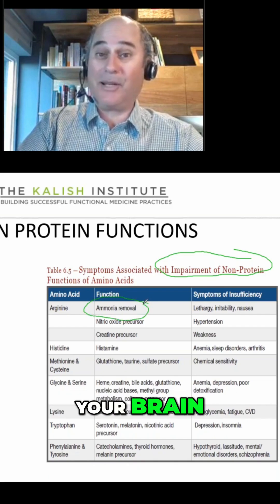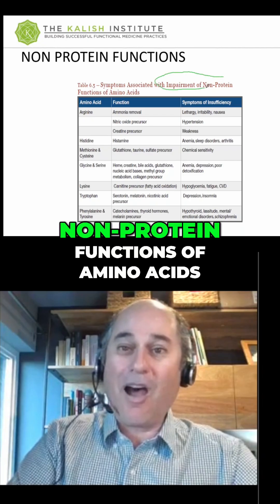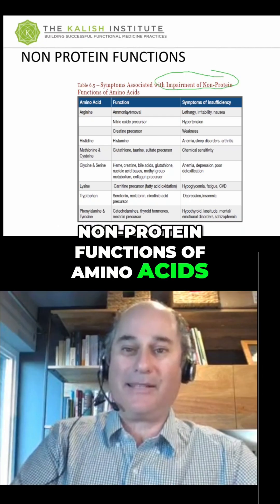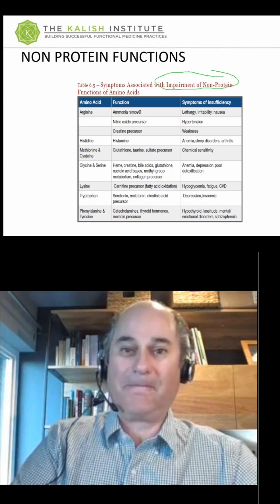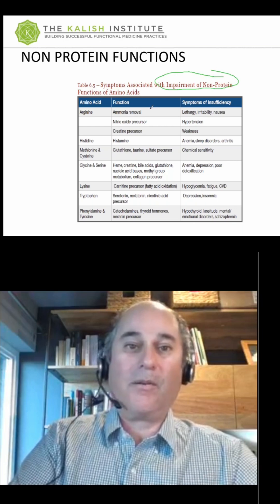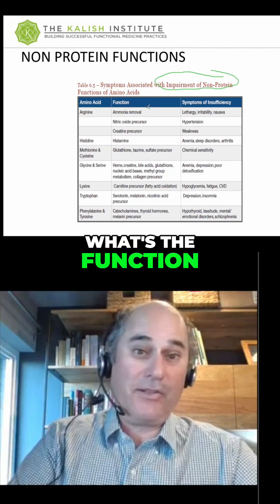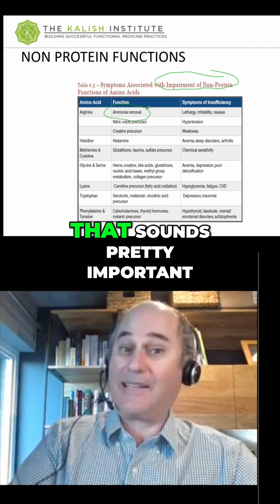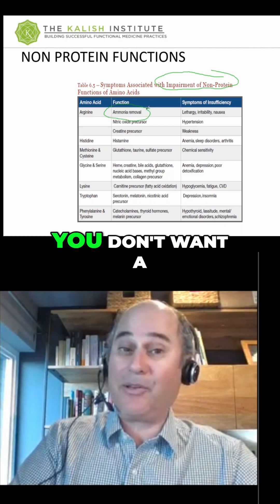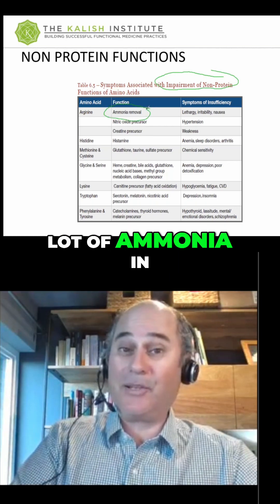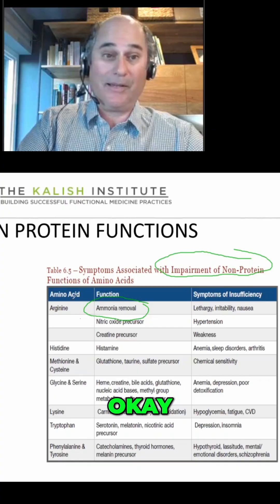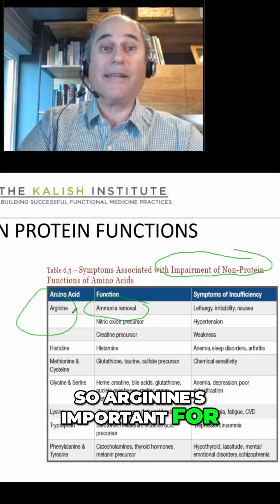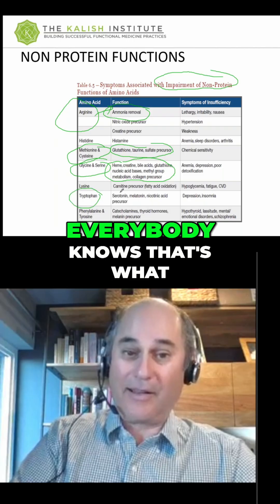You don't want a lot of ammonia in your brain. So, non-protein functions of amino acids — what's the function? Getting rid of ammonia. That sounds pretty important. So arginine is important for getting rid of ammonia.